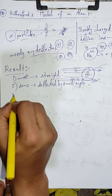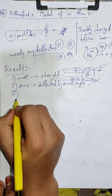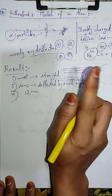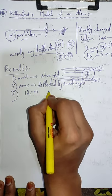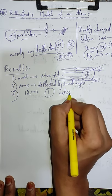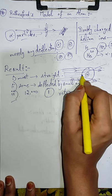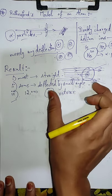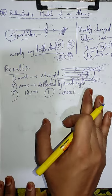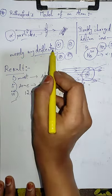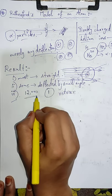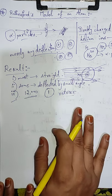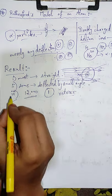Aur jo next unhone dekha, jo sabse zyada surprising result tha unke liye — lagbhag 12,000 rays agar iske upar daali jayein toh un lagbhag 12,000 mein se ek ray aisi thi jisne apna path retrace kiya — yani woh yahan se gayi, kahin hit hui, aur wapas se isi raaste se bounce back kar gayi. Yeh bahut hi shocking tha Rutherford ke liye, kyunki unhone aisa bilkul expect nahi kiya tha — unhone socha tha ki hardly koi deflection dekhne ko milegi.